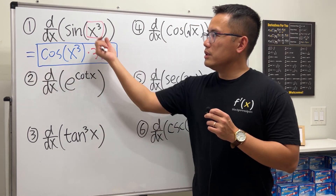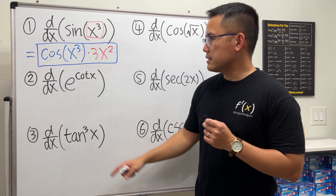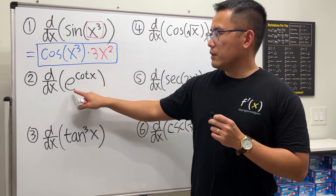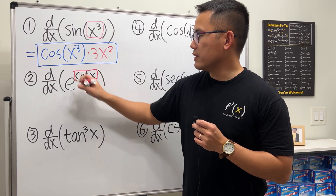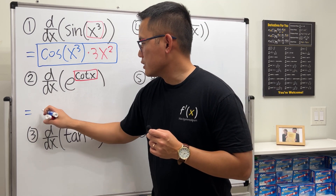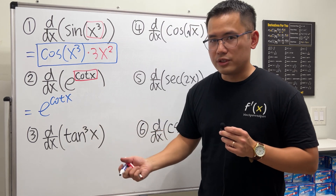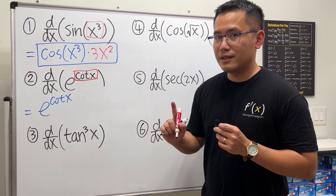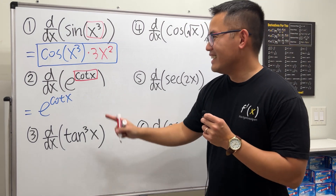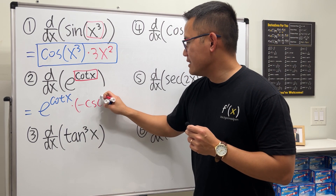Next we have to differentiate e to the cotangent x. We have e to this function, and the derivative of e to something is just e to the same thing, so write down e to the cotangent x. Then use the chain rule — the derivative of cotangent x is negative cosecant squared x.